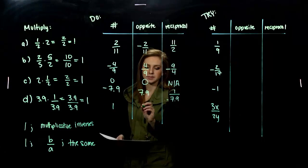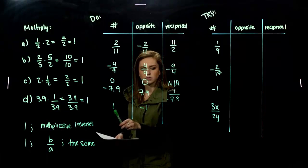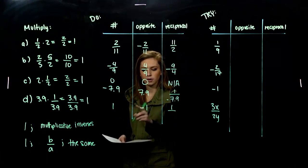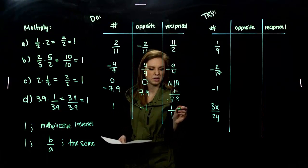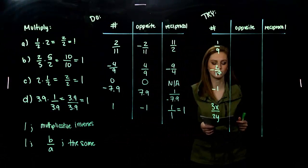And, what about 1? Its opposite is negative. And, what about its reciprocal? So, I've got 1 over the number, but really, what is that? 1. So, it's its own reciprocal, which is kind of cool, kind of unique.